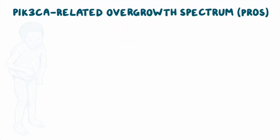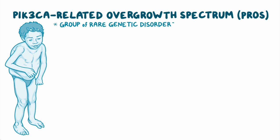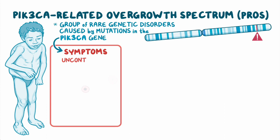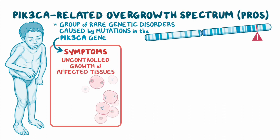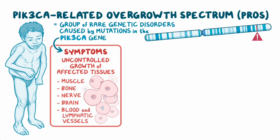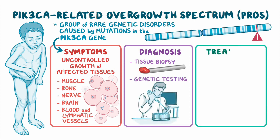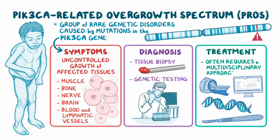As a quick recap: PROS is a group of rare genetic disorders caused by mutations in the PIK3CA gene, which causes uncontrolled growth of affected tissues such as muscle, bone, nerve, brain, and blood and lymphatic vessels. PROS is diagnosed through tissue biopsy and genetic testing, and treatment often requires a multidisciplinary approach.